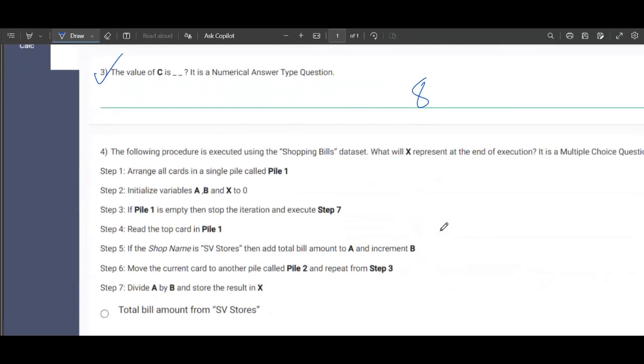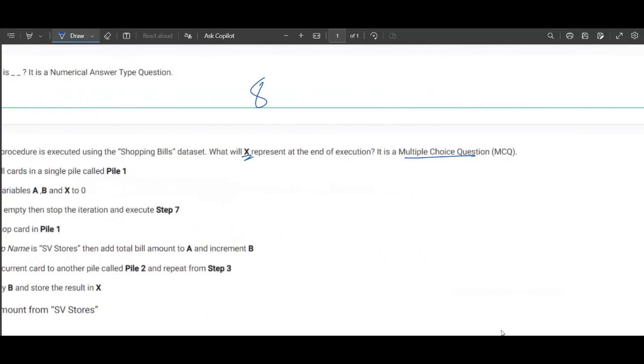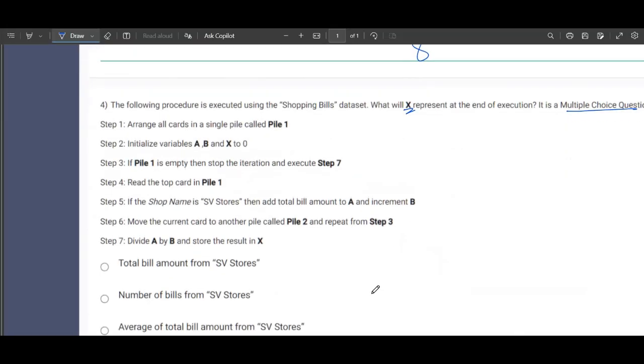Now coming to the fourth question. The following procedure SBA is executed using shopping bills dataset. What will X represent at the end of execution? It is a multiple choice question, so we'll have to stress more upon MCQ. That means only one will be correct among these four.